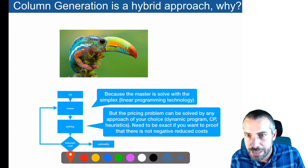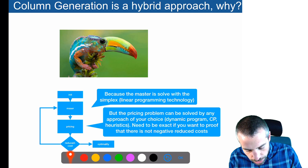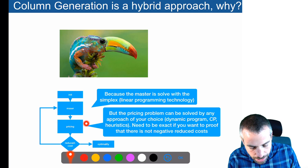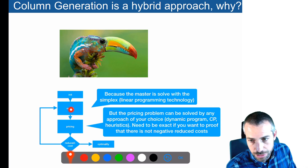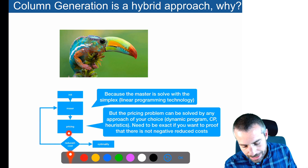We often say that column generation is a hybrid optimization method because we decouple the primal solving and the pricing problem. You've got the master problem, the primal problem — you solve it with linear programming. But nothing is mandatory for solving the pricing problem; you could solve it with dynamic programming, constraint programming, heuristics, or whatever you want. You don't even need to be exact unless you want to prove optimality, as long as you can find something with a negative reduced cost.